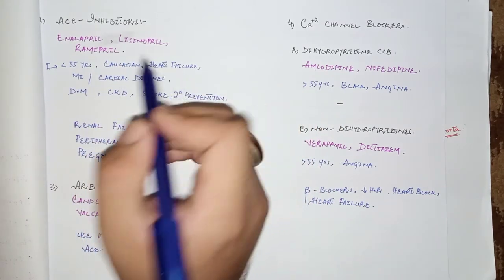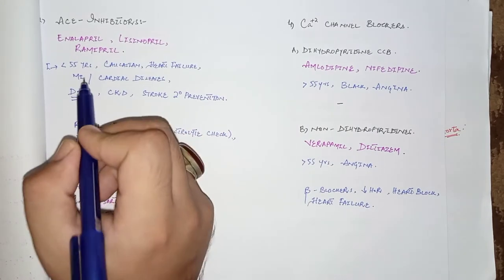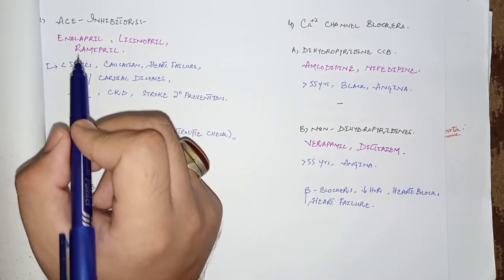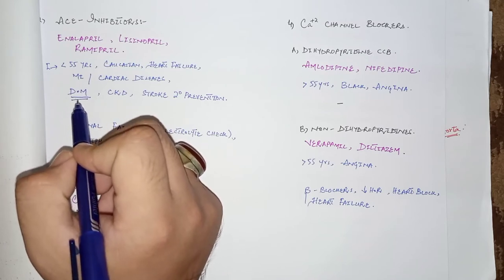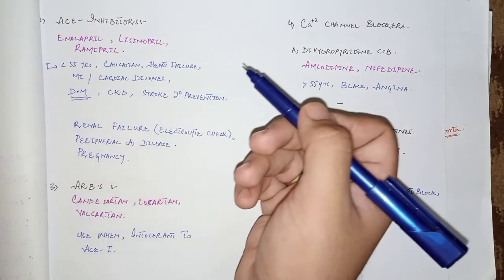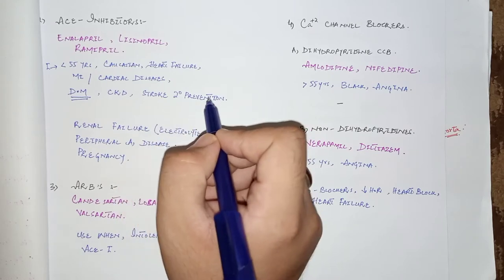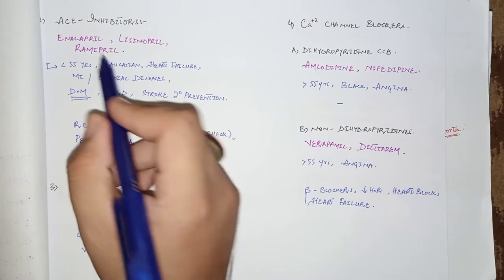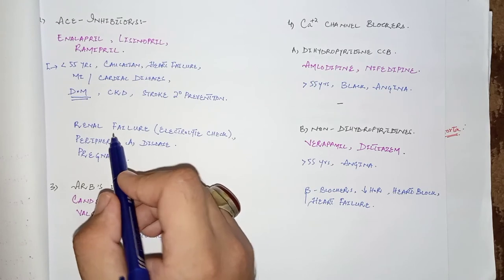ACE inhibitors are the gold standard drugs for patients with diabetes mellitus, particularly for diabetic nephropathy, and can also be used in chronic kidney disease and for secondary prevention of stroke, similar to thiazide diuretics. Remember that diabetes mellitus is a very important indication for ACE inhibitors.